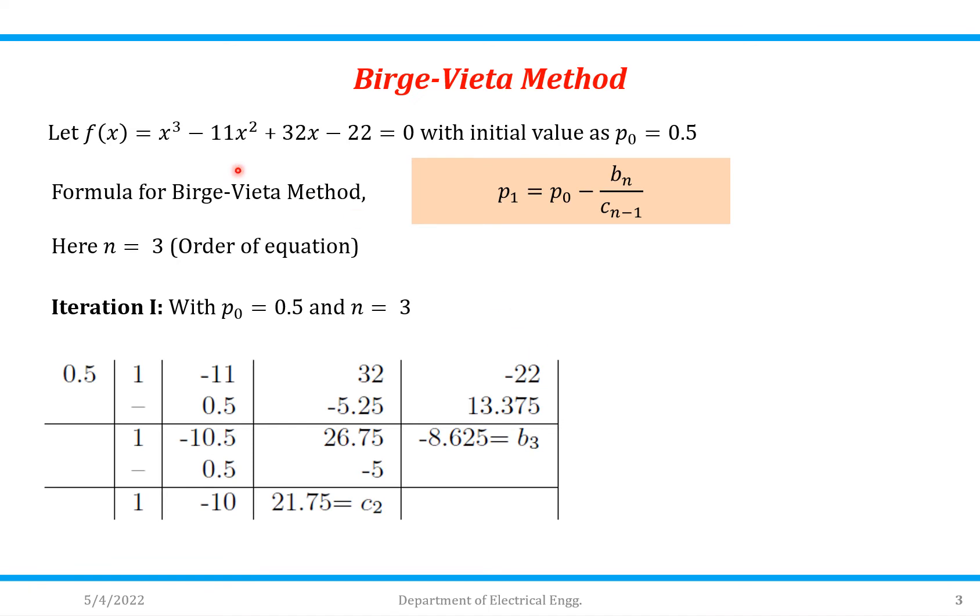So here coefficient of x³ is 1, coefficient of x² is -11, coefficient of x is 32, and constant value is -22 with p₀ as 0.5. So this one will be as it is, 0.5 × 1 = 0.5. Add these two we will get -10.5.